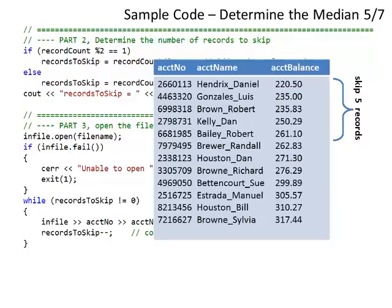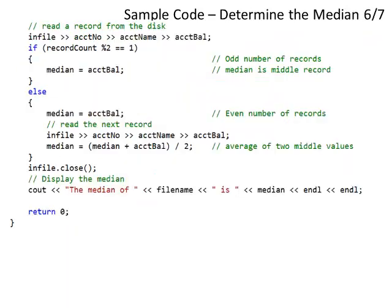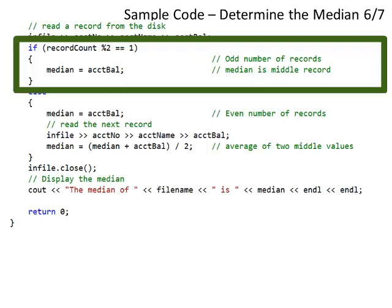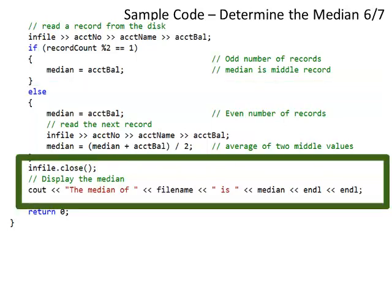For example, if I need to skip 5 records, then record number 6 is the one I need for the median value. I read a record from disk. If the count is odd, all I need to do is read that record — the median is the account balance. If I have an even number of records, I read two records: I set median to the first account balance, read another record, add it to the median, divide by 2, and display.